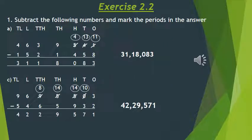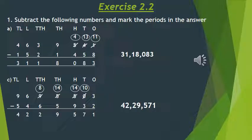Question 1: Subtract the following numbers and mark the periods in the answer. First we have written the numbers in the respective places and then let's start from the ones place. 1 is smaller than 8, so we have taken 1 as 11. That means we have borrowed from the tens place, so 4 will become 3. So first we will be subtracting 8 from 11, that is 11 minus 8, which is 3.